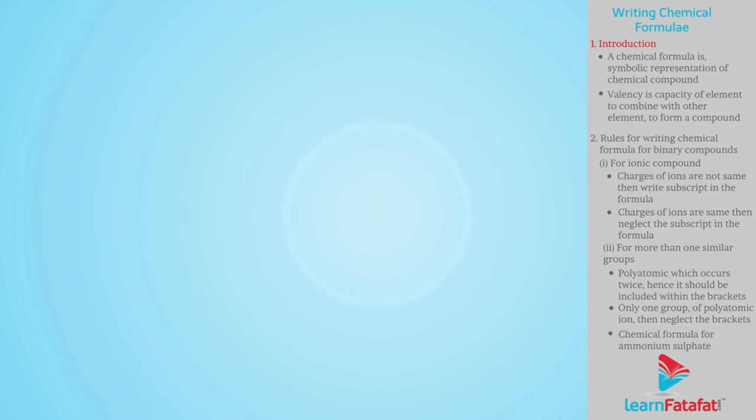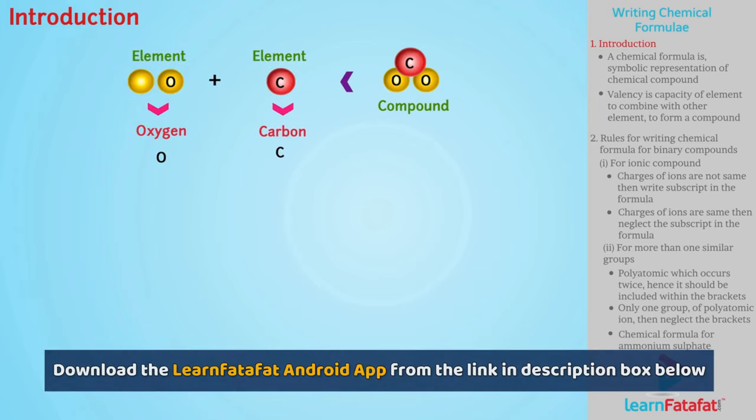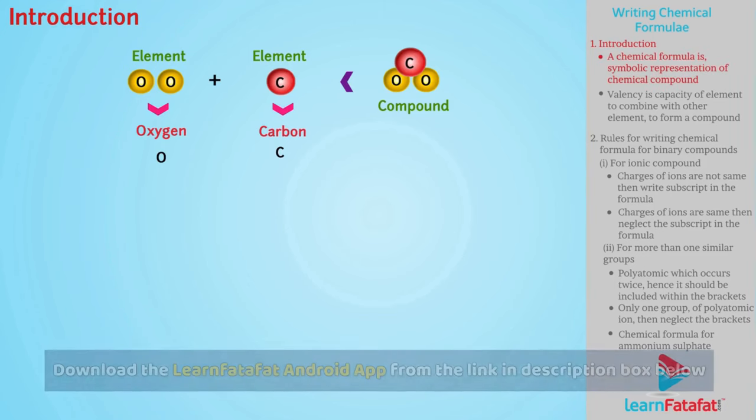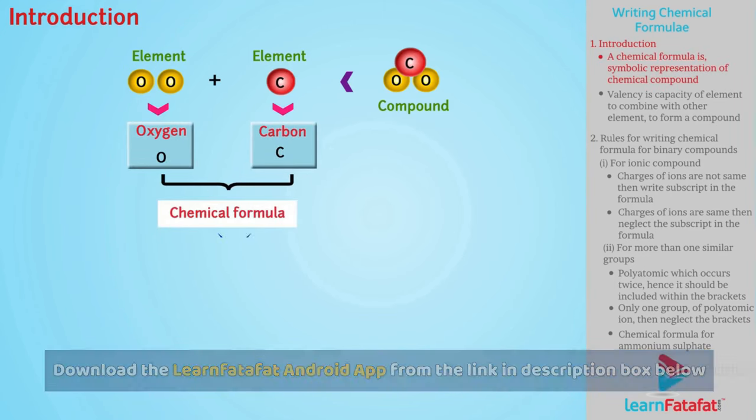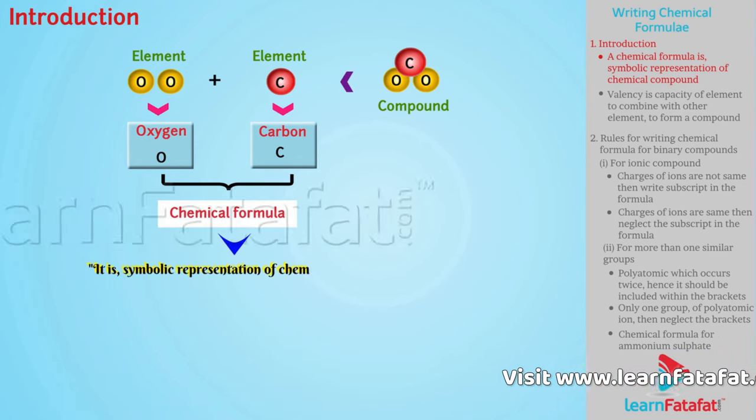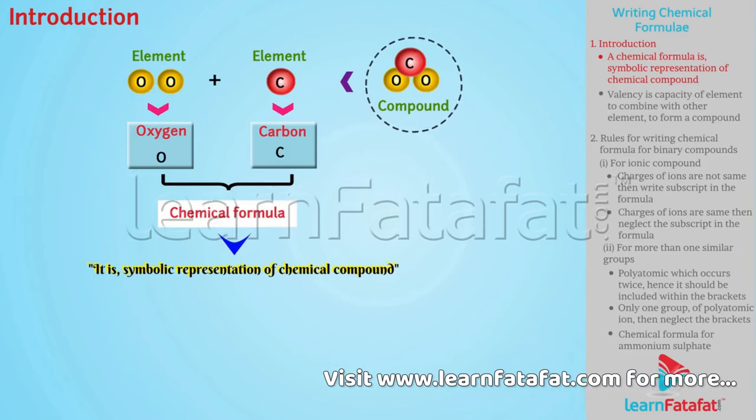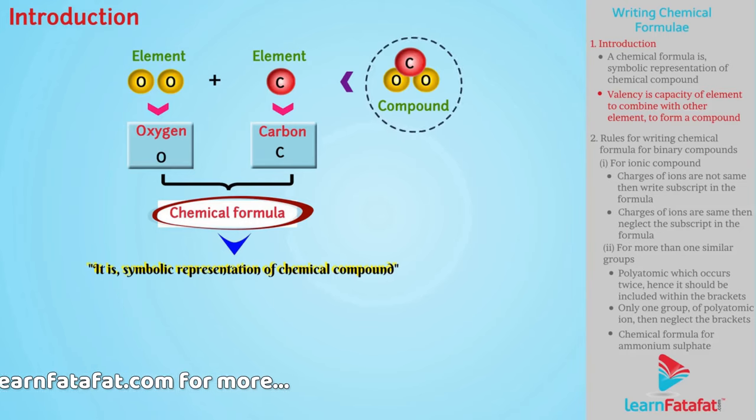A compound is made up of elements. Each element has a specific symbol. These symbols are used to derive chemical formula. A chemical formula is symbolic representation of chemical compound. For writing a chemical formula, it is necessary to know the valency of the elements.